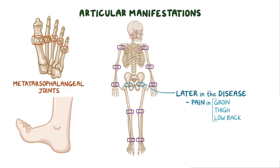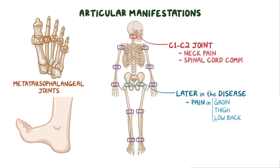One very dangerous spot is the C1-C2 joint, which is the only synovial joint in the spine. When that's affected, it can cause neck pain, and if it's not managed properly, it can lead to spinal cord compression and tetraplegia.